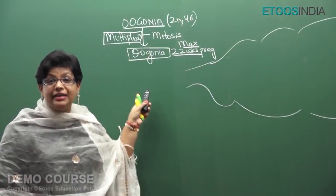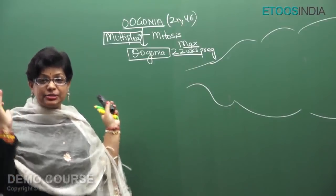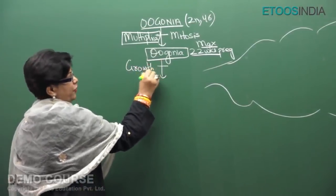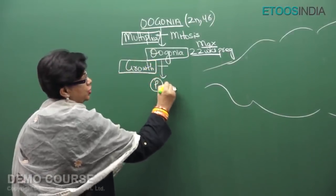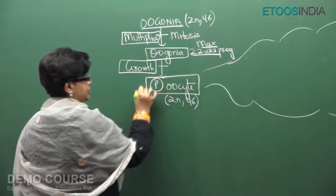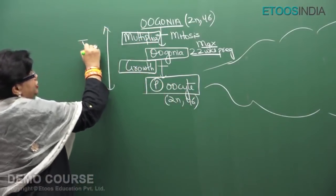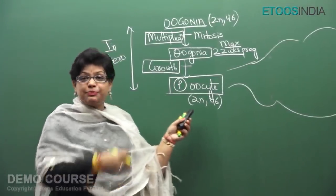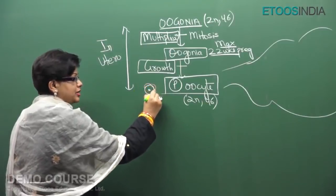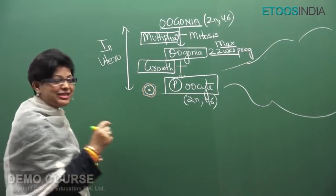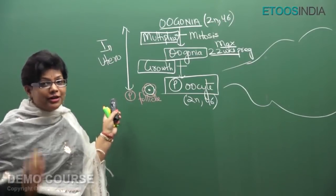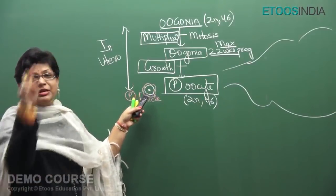No more oogonia are added after birth or after puberty, meaning a woman is born with a fixed number of oogonia. These oogonia undergo a growth phase — just as in sperm formation — and form primary oocytes, which are also diploid, just like primary spermatocytes. These primary oocytes are then surrounded by a layer of flat squamous follicular cells, forming a primordial follicle. When those squamous cells become cuboidal, it is called a primary follicle.